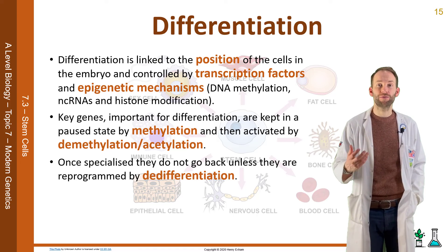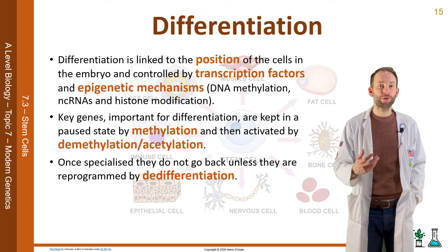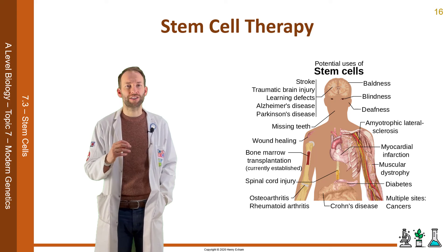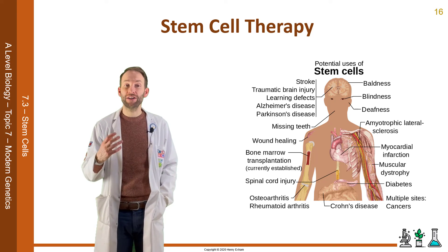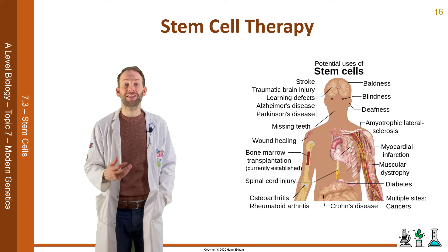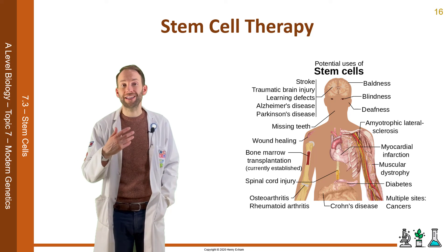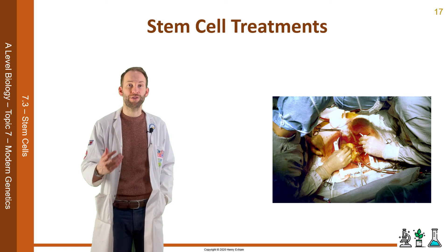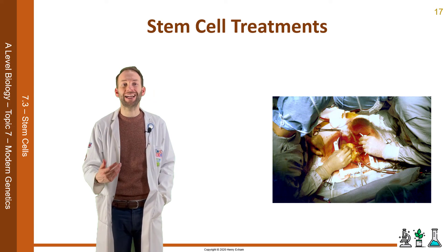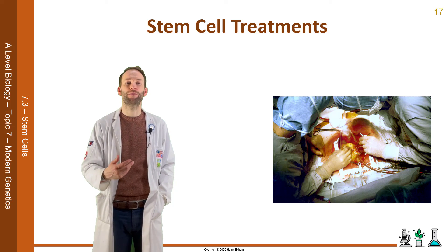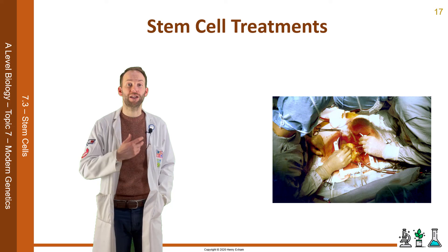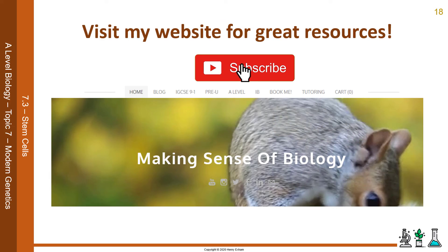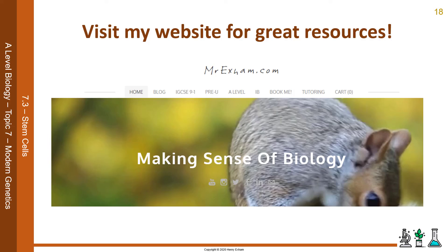Research into stem cells has opened up exciting medical applications. Stem cell therapy is the introduction of adult stem cells into damaged tissues to treat diseases. The only established common example currently is using bone marrow transplants to treat leukaemia. However, many more treatments are being tested, especially for Parkinson's disease and multiple sclerosis. The hope is that in the future, organ transplants could be replaced by growing whole new organs from a patient's own stem cells using therapeutic cloning, removing issues of organ rejection and the need for immunosuppressant drugs. Therapeutic cloning could also treat type 1 diabetes and Alzheimer's disease.